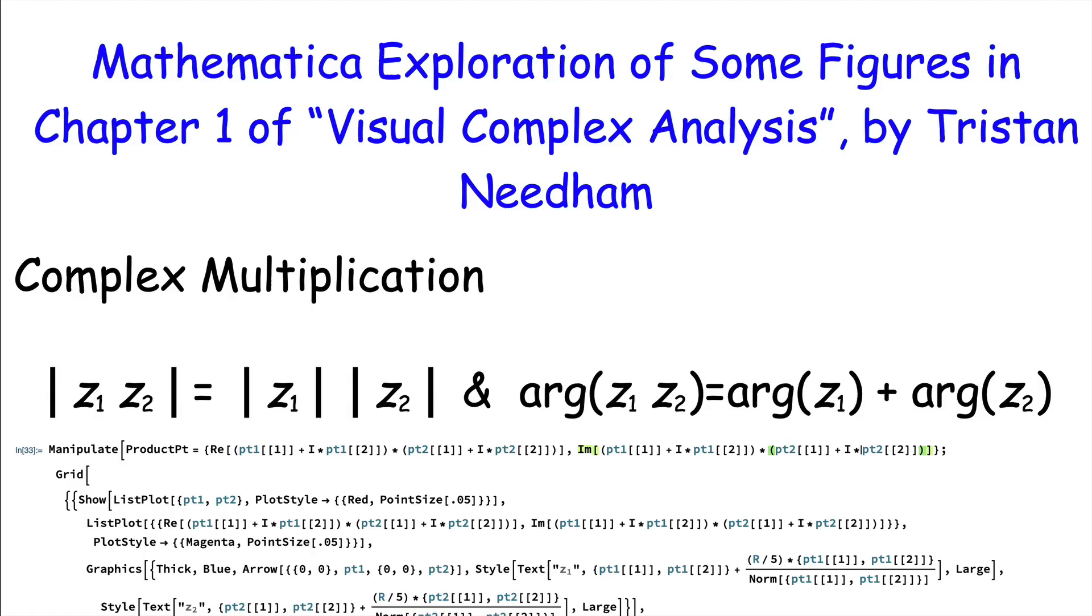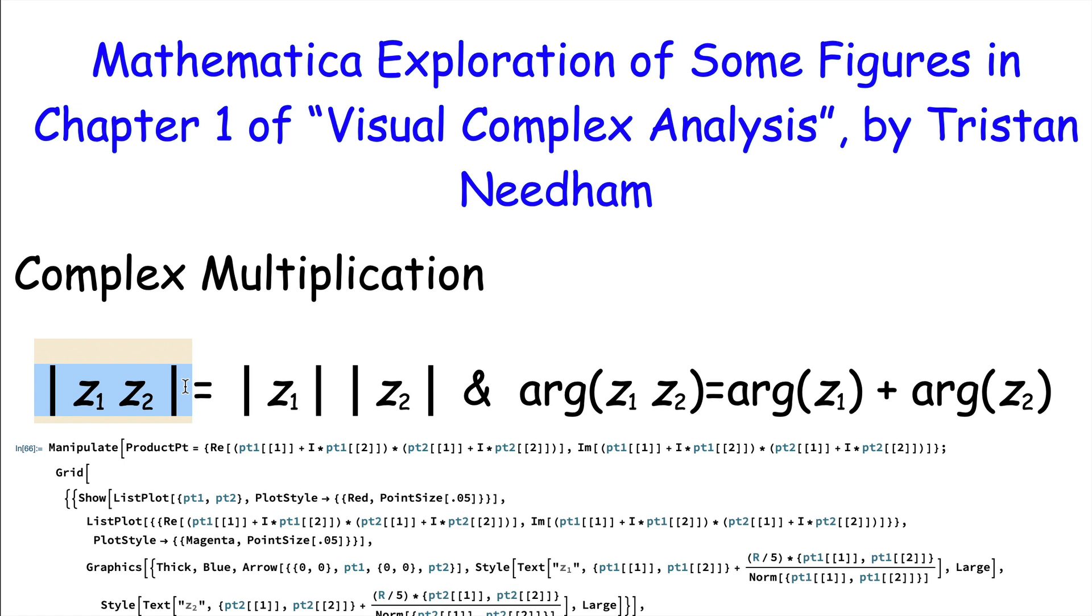The first bit of code emphasizes how to interpret complex multiplication. When we multiply two complex numbers, the absolute value of the product, which is its distance to the origin, is the product of the absolute values of each complex number individually. You multiply the distances to the origin.